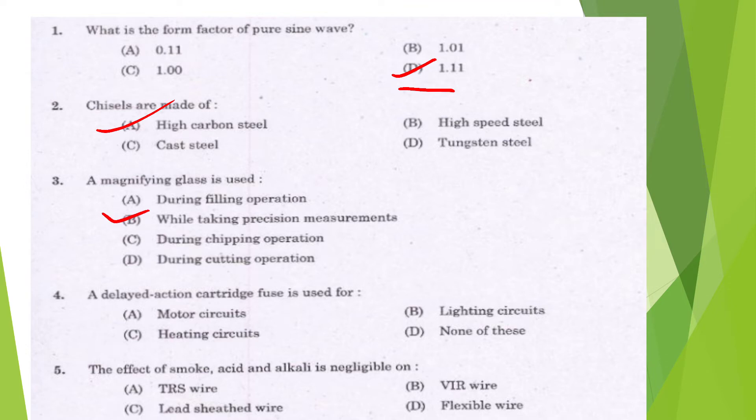Question 4: Delayed action cartridge fuse is used for motor circuit, lighting circuit, heating, or none of this? It is option A, motor circuit. Question 5: The effect of smoke, acid and alkali is negligible on TRS wire, VIR wire, lead sheath wire, or flexible wire? Option C.